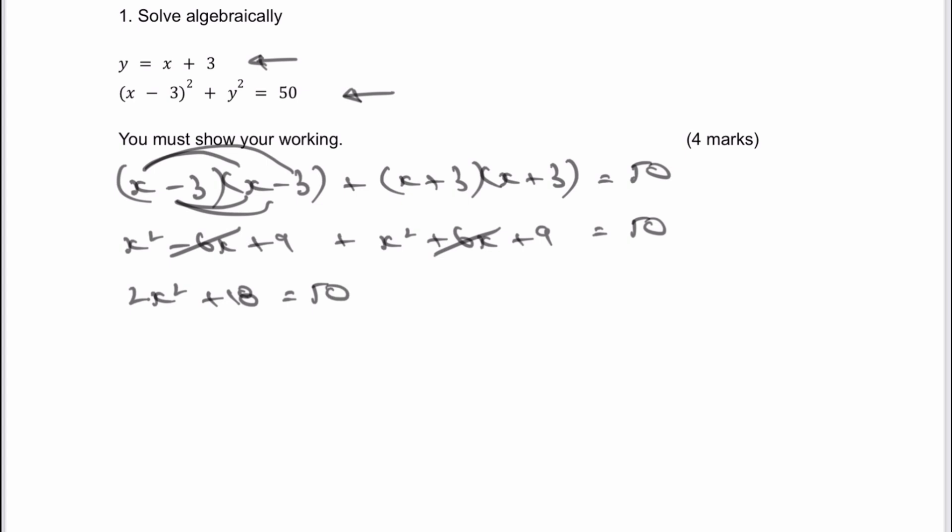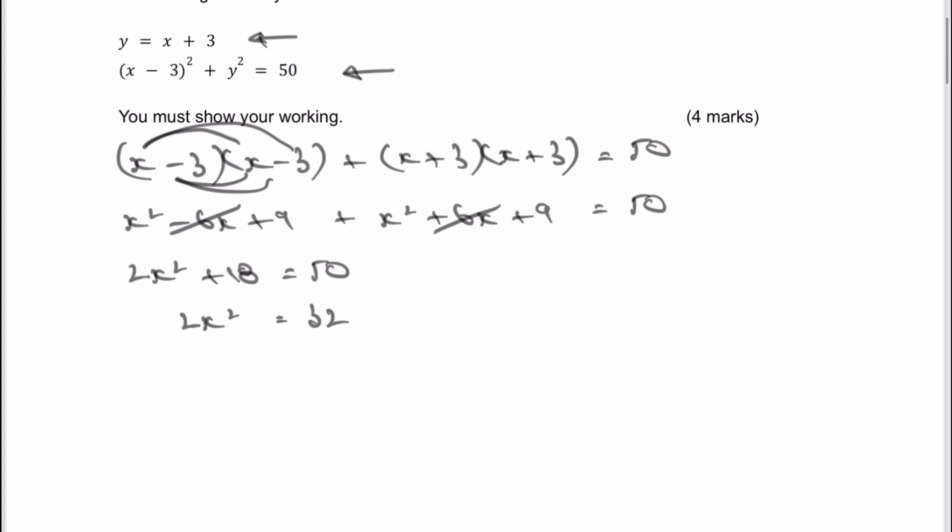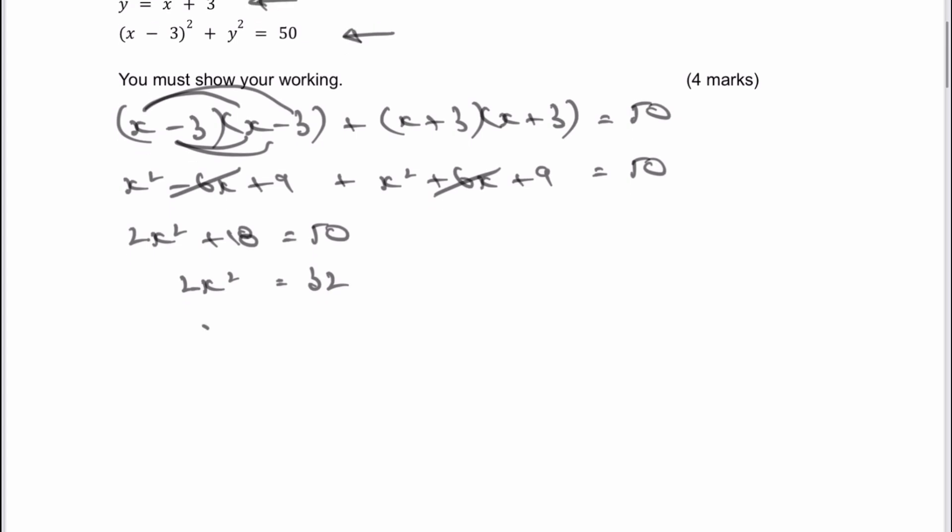So really it's a case of then solving for x. So if I'm minus 18 from both sides, I'm going to get 2x squared equals 32. Then I'm going to divide through by 2, and I'm going to get x squared equals 16. So therefore, the square root of 16 gives me a value of x being positive 4 or negative 4.